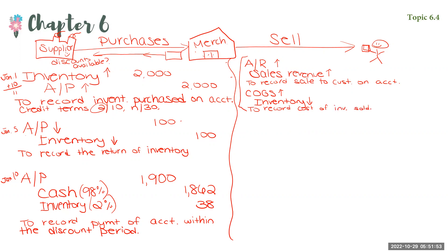Other common entries we might see on the selling side of our business — remember how we had returns when we bought inventory and it was defective? Our customer might purchase something and realize it's defective. We don't want them to be sad, so we might have a policy saying if they're not happy or if it's defective, they can return it. Let's look at the journal entry to record a return.